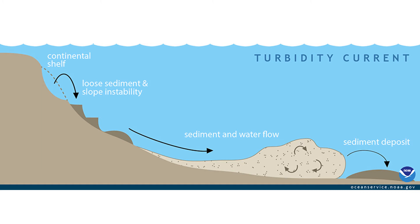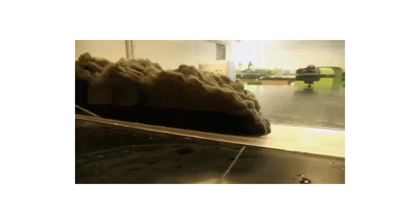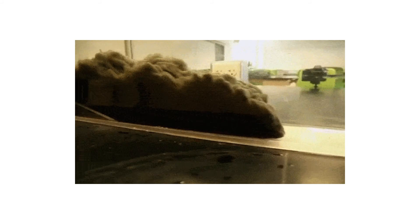Coming back to turbidity currents: if a mass flow is more diluted and turbulent, it can be called a turbidity current. Turbidity currents are also mass flows driven by gravity, but they represent a lower energy, lower density, turbulent flow that leaves behind deposits called turbidites. Debris flows can become turbidity currents when they move out of their canyons and into more open areas like submarine fans.